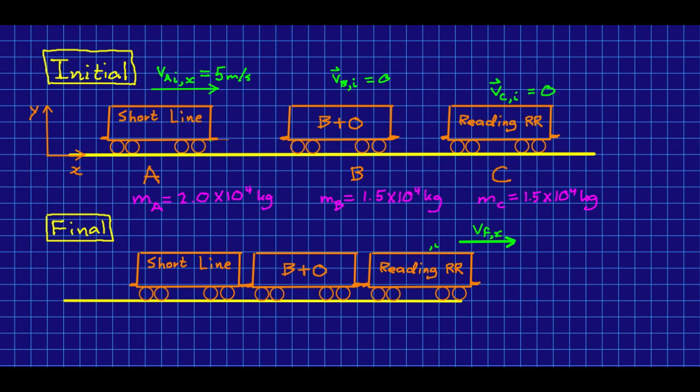So this might seem a little complicated because surely we'll first have to figure out what happens in the collision between the first car and the second. And then we'll have to figure out what happens in the collision between them and the third, right?